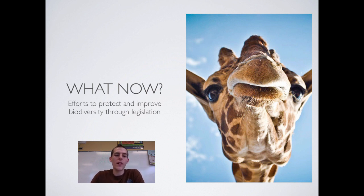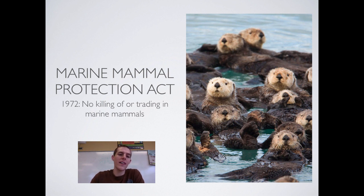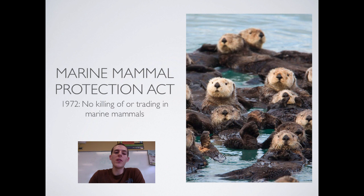We're going to start by talking about efforts to protect and improve biodiversity through legislation. There are a couple of laws you need to know. The first is the Marine Mammal Protection Act — I've got a picture of otters because they tend to be some of the cutest sea creatures. It came about in 1972. It's an American law that says you are not allowed to kill or trade in marine mammals — sea otters, manatees, dolphins, whales, porpoises, orcas, and things like that. You are also not allowed to buy and sell their parts, extracts from the animals, or anything taken illegally from those animals. So no buying, selling, or killing of marine mammals.